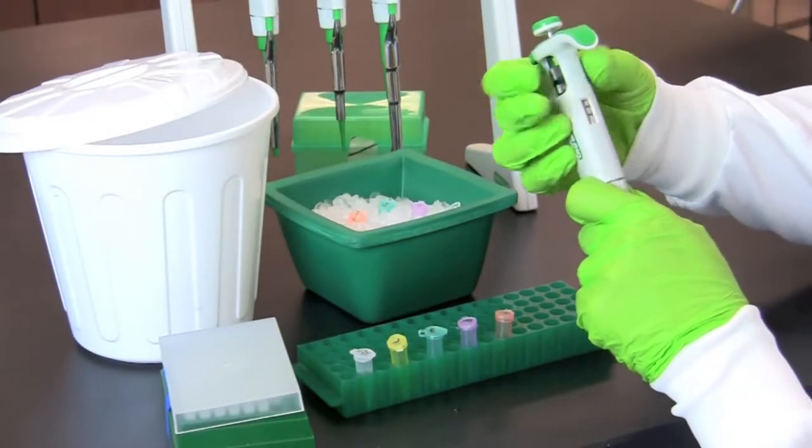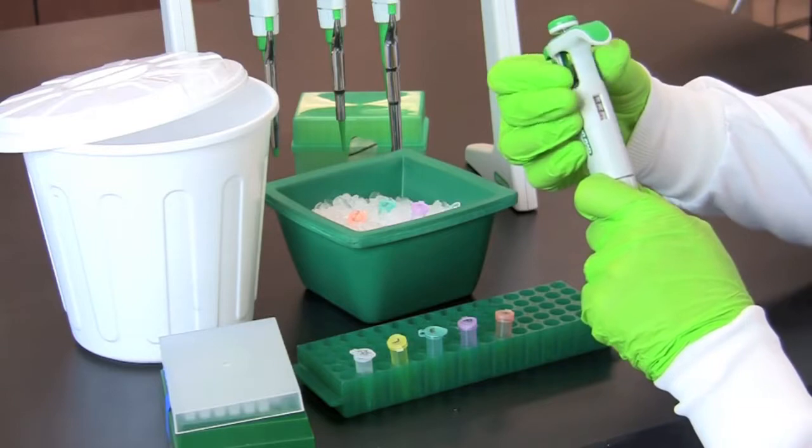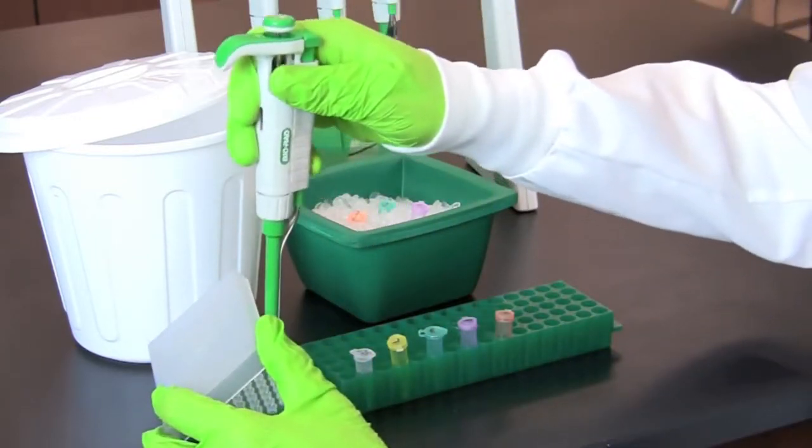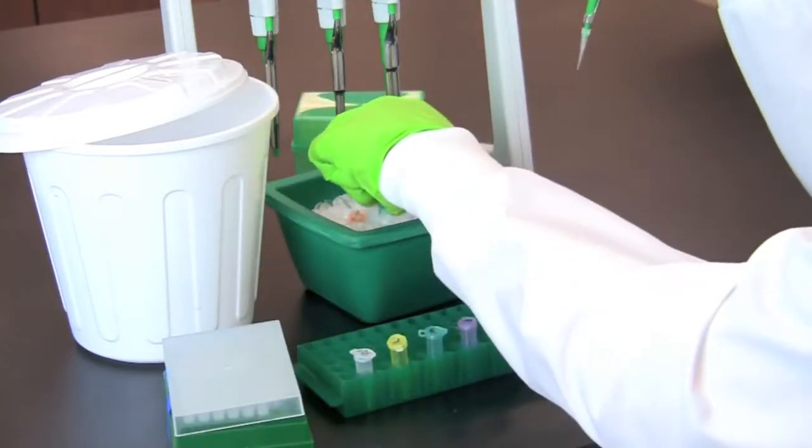Once you have finished transferring 2X restriction buffer to each tube, reset your micropipette and use a fresh tip to transfer one microliter of restriction enzyme to the corresponding tube.